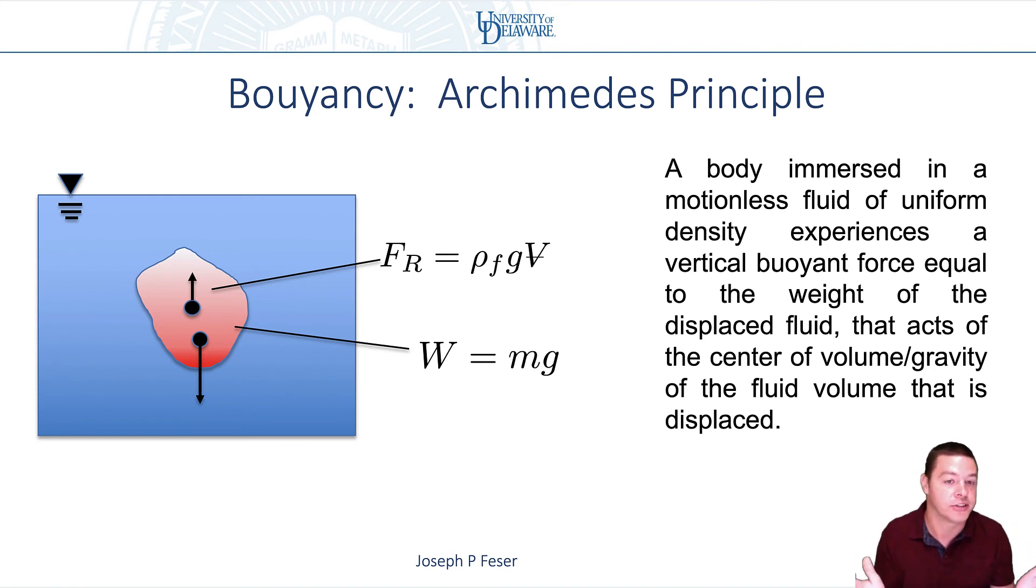the resultant force is exactly the same as if there was actually fluid in that location, like the original fluid was in those locations. And so the resultant force due to the pressure distribution on the outside is still rho of the fluid times g times the volume of the object, and it still acts at